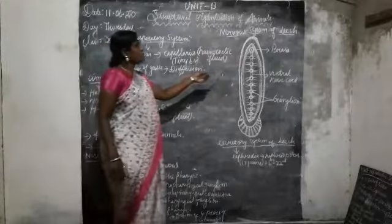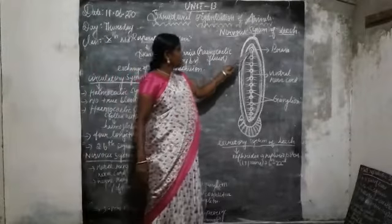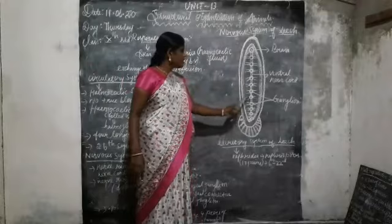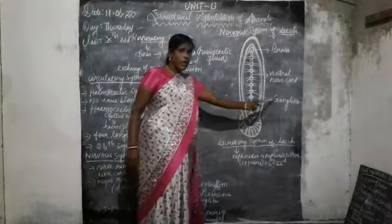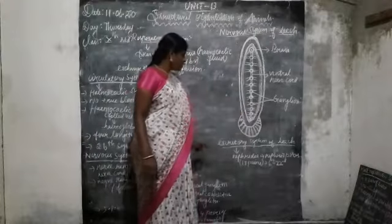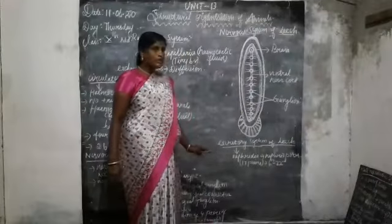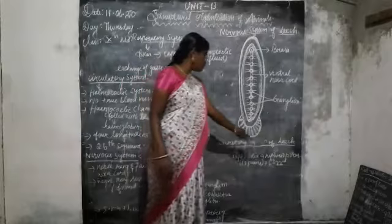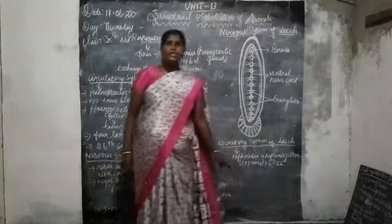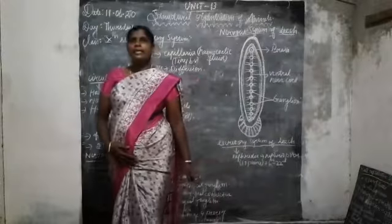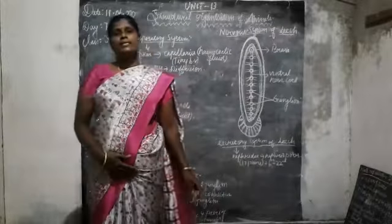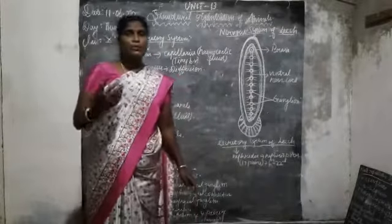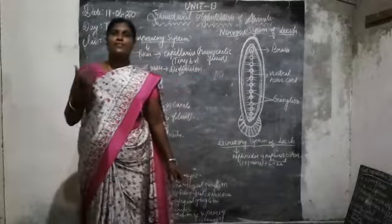This is the brain, this one is the ventral nerve cord, and this is the ganglion. Now I want to talk about the excretory system of leech. As you already know, in the case of annelids, excretion takes place by the nephridia. In the case of leech also, excretion takes place by the nephridia.